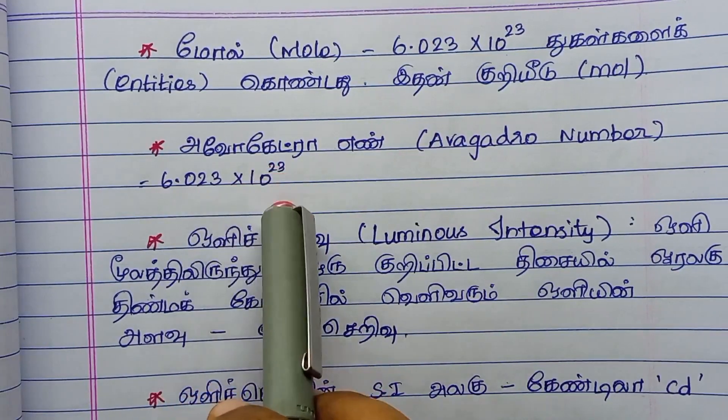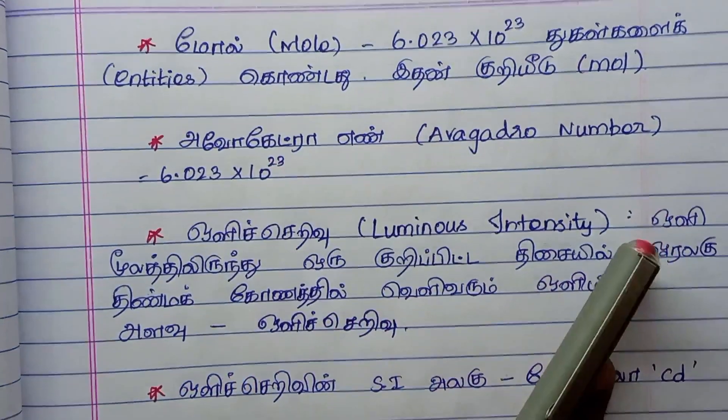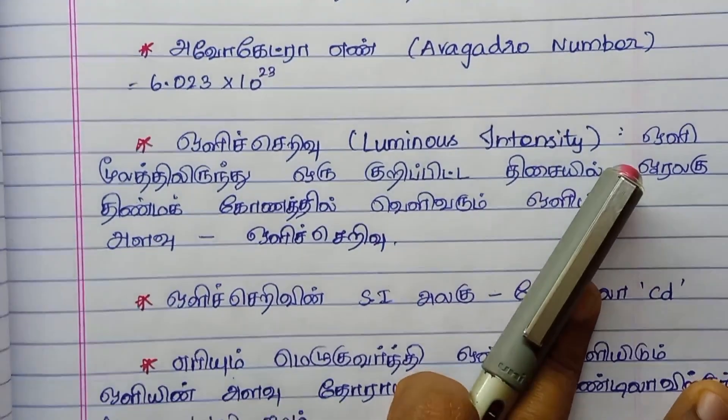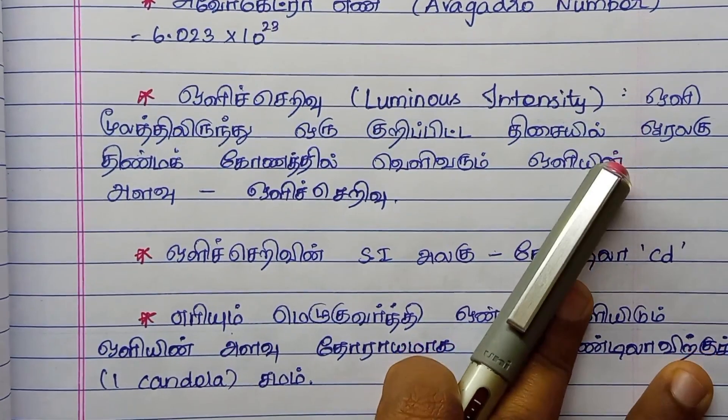This is the Avogadro number — 6.023 × 10²³. The next fundamental quantity is luminous intensity.